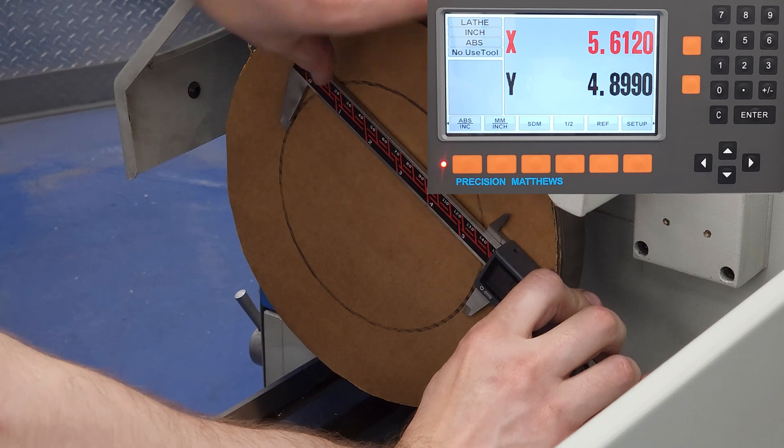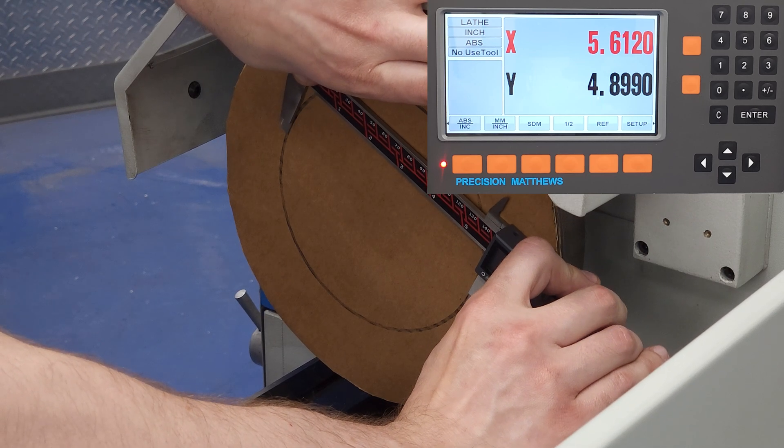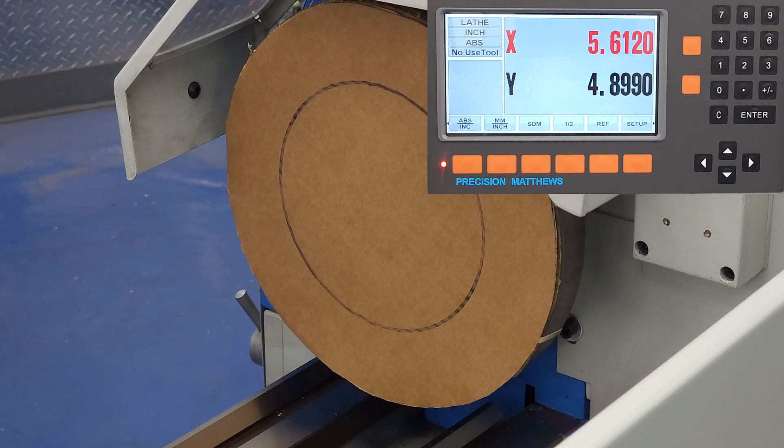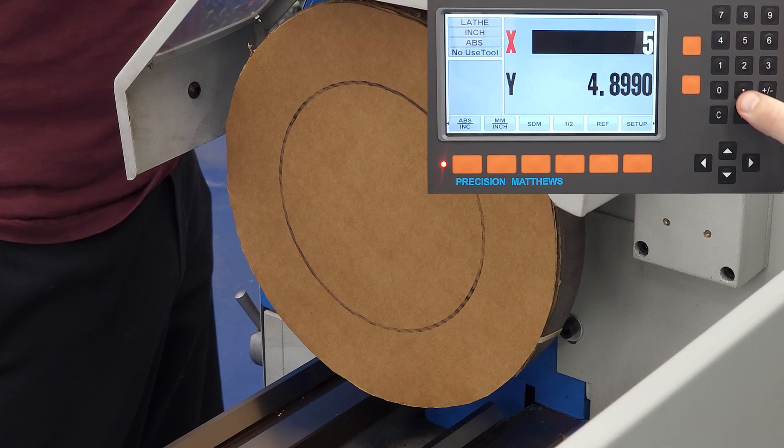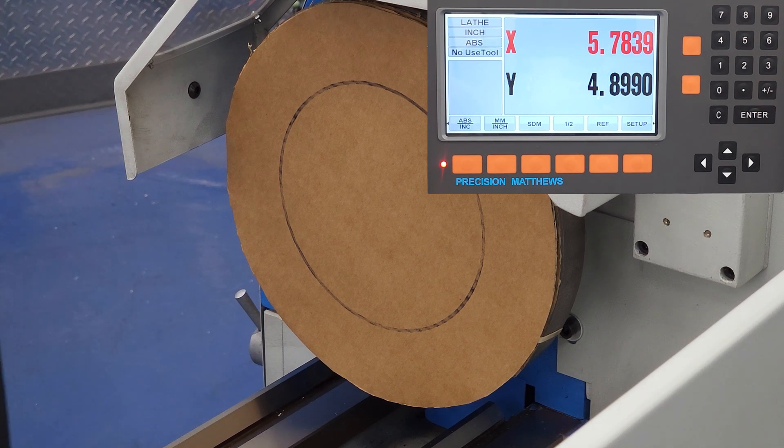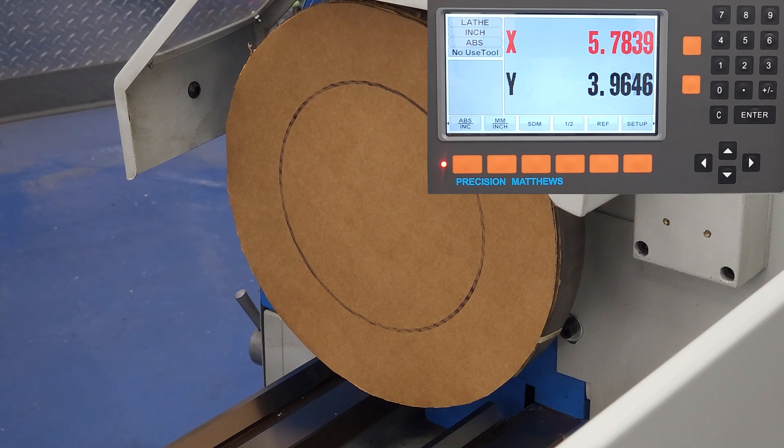And much like in the mill DRO video, I'm going to use a Sharpie marker and cardboard to make it obvious what I'm doing. You can imagine that the Sharpie marker is a cutting tool, and the line that it makes is the circumference of the part that we're cutting. Using this method, or just about any method, the first step is to take a skim cut. In this case, we'll just draw the first line with the marker.